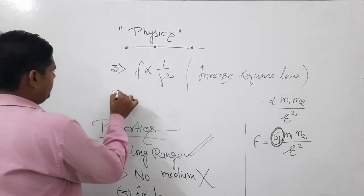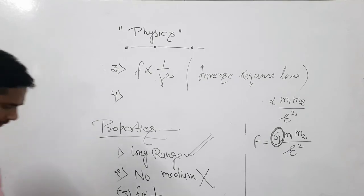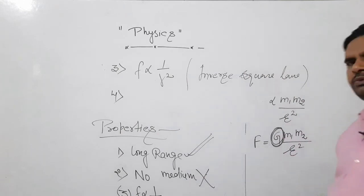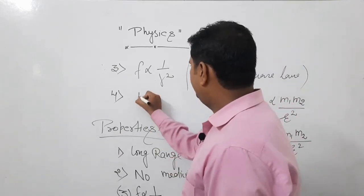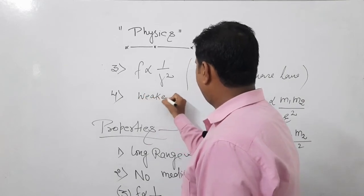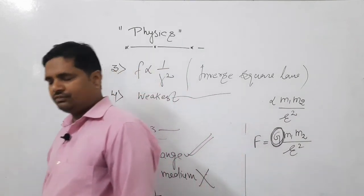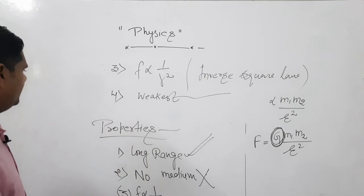And one more property. Just a while ago I was telling you the order. In that you must have noticed, gravitational force is the weakest force. Then it is a weakest force known in nature. It is the weakest force known in nature.